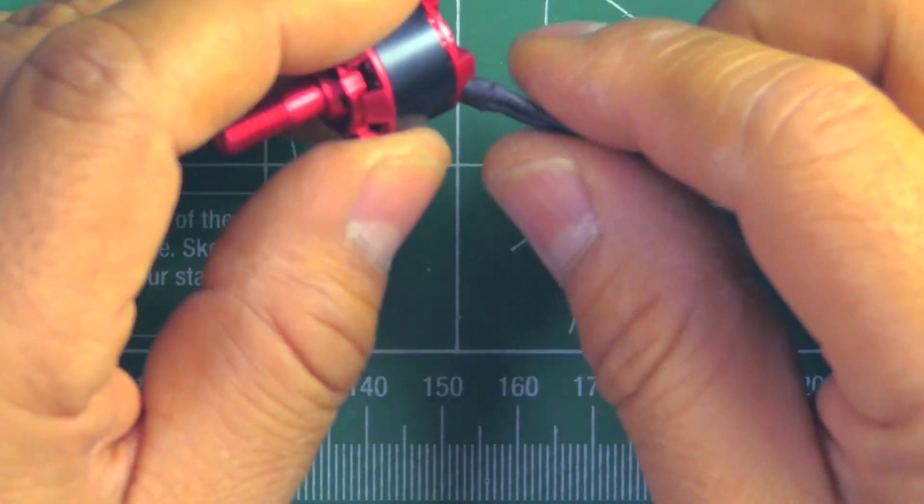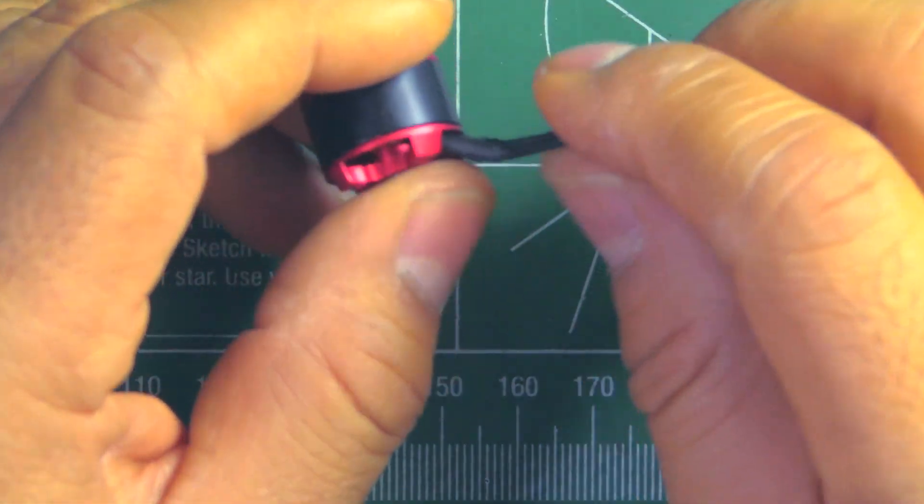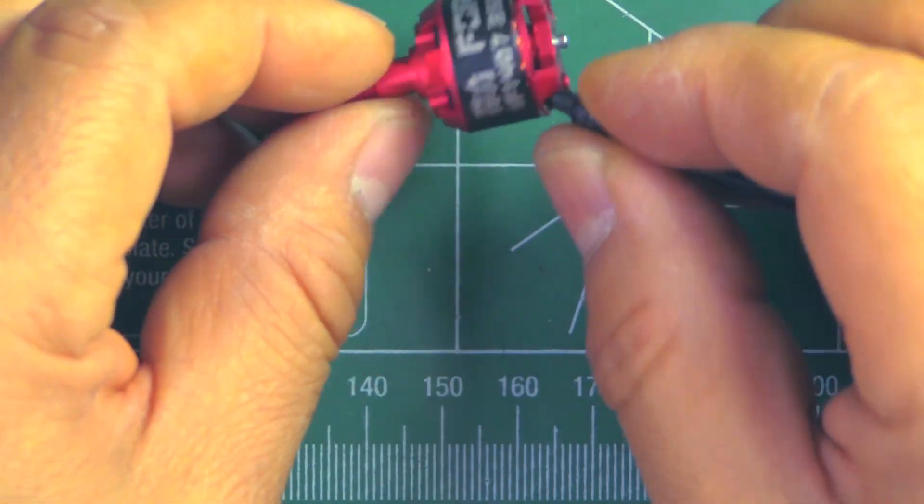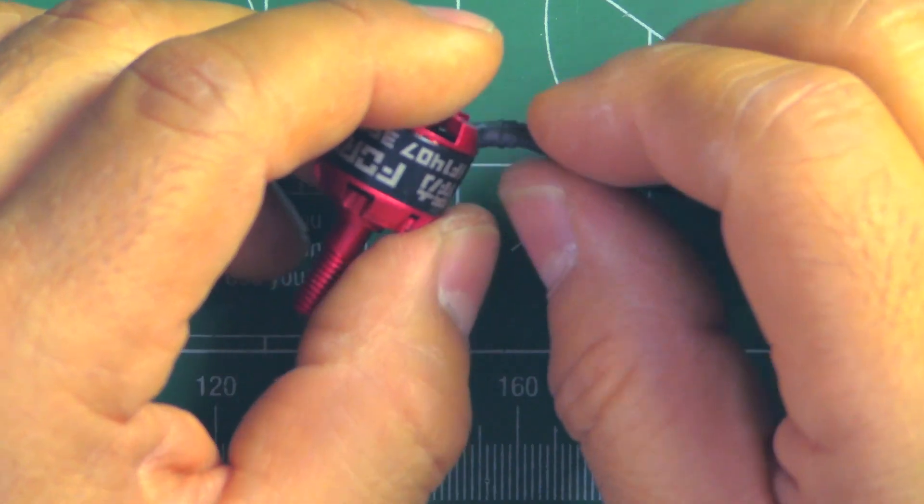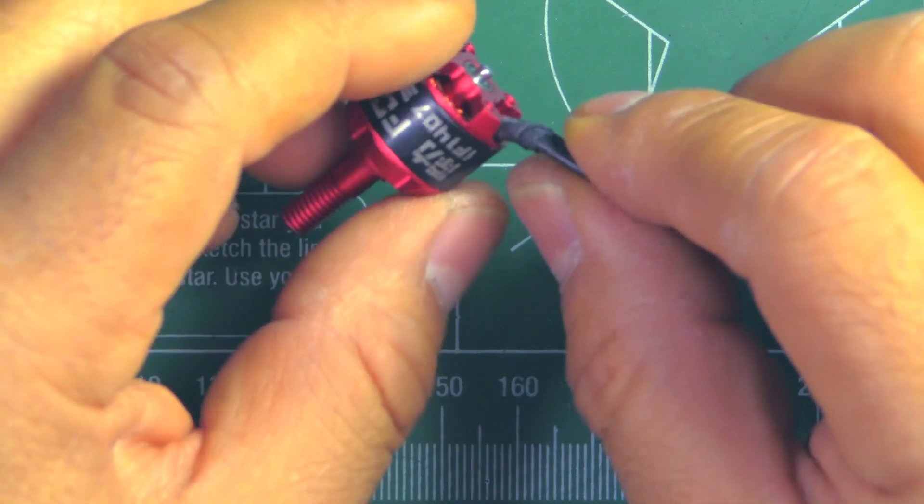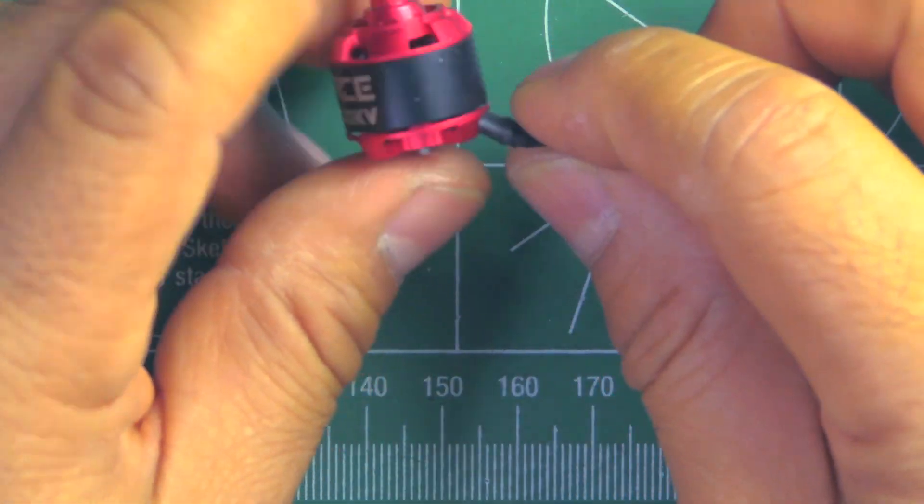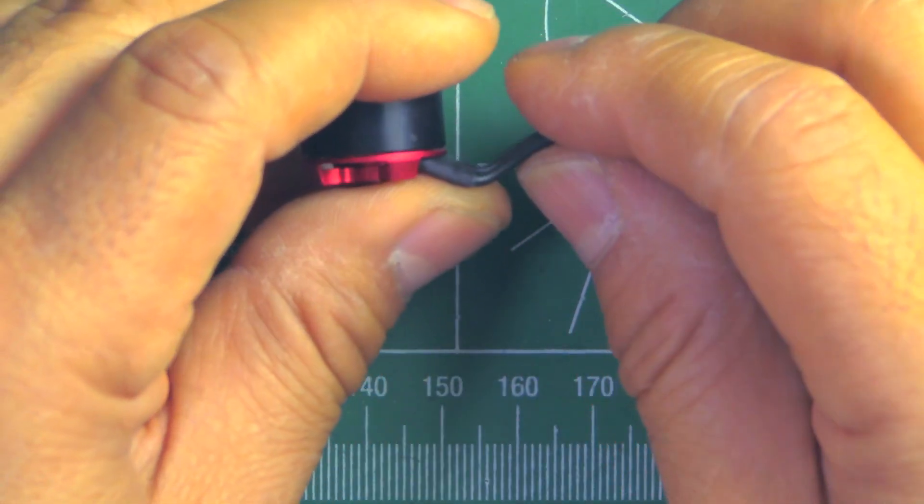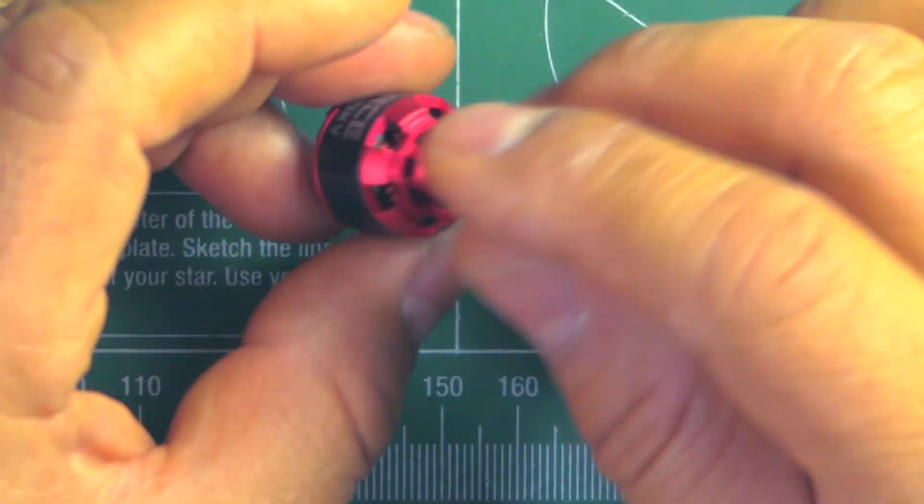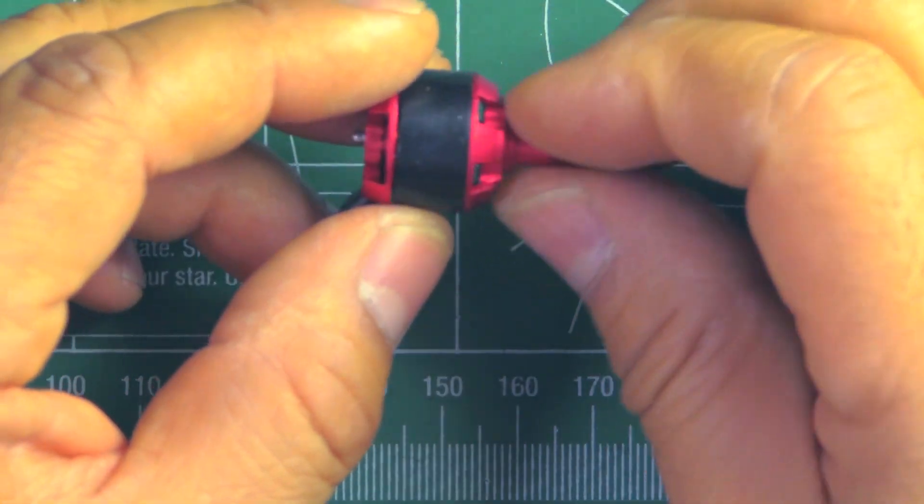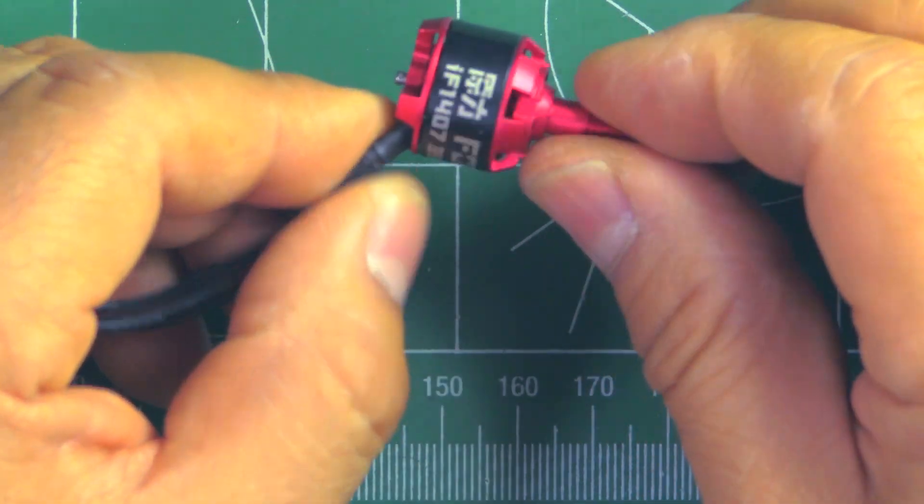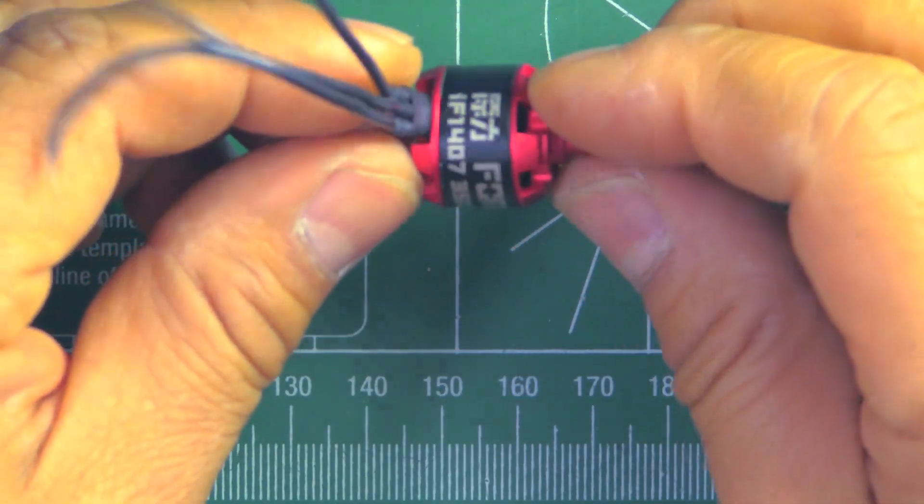So as far as specs from the product page, they're saying this one's good for 3 to 4S, and maximum continuous current should be 17.3 amps, that's what they're saying, or 256 watts, so that would be the maximum. About 18 amps should be good enough for most 3-inch props.